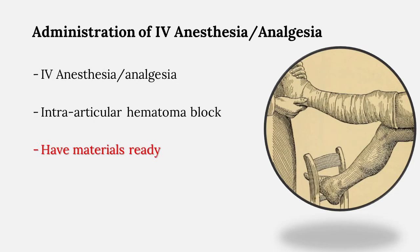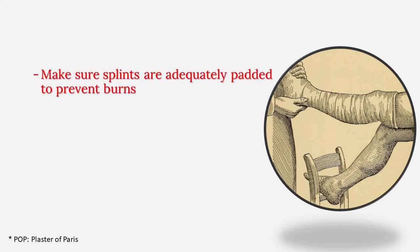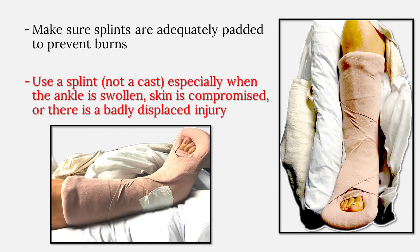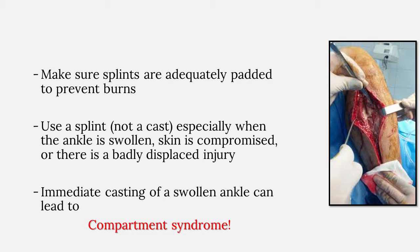It is important to have splinting materials ready. Adequate padding under the plaster of Paris is absolutely required to prevent burns. Splinting of the ankle — but not casting — is important, especially if the ankle is swollen, there is skin compromise, or the bony injury is significant. Immediate casting of an ankle fracture that demonstrates significant swelling can lead to compartment syndrome.